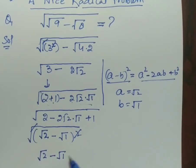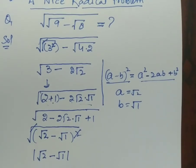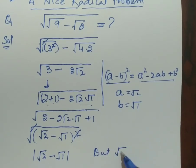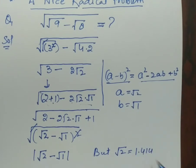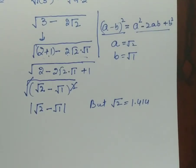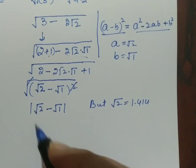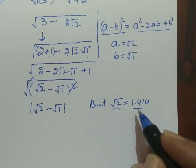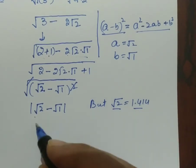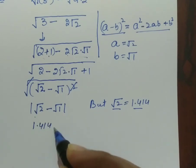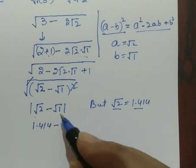This can be your answer, but we know the value of root 2. The value of root 2 is 1.414. So if you want to calculate or find further, substitute the value of root 2, that is 1.414 here. So 1.414 minus the root of 1 is always 1.